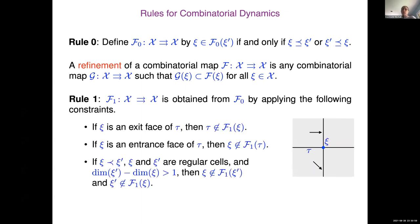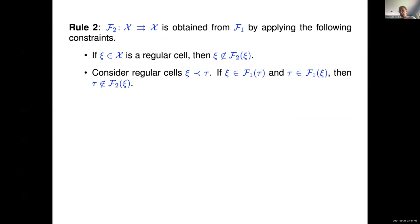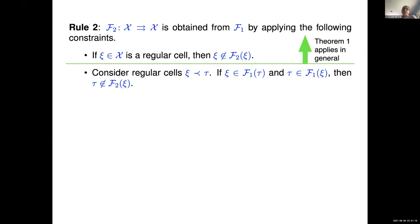I've thrown a lot of information very rapidly. What I do want to point out is that we've used the Rook field to provide local labelings of cells, and from these local labelings I build a combinatorial dynamics. The simplest is: if I'm at a cell, I have the opportunity to go to myself and to any cell that I'm a face of, or any cell which is a face of me. The way I get useful information is by performing refinements. We have a series of rules that go through, look at exit faces, and take away different edges. If I stop at a certain restriction, then Theorem 1 applies in general. It's the additional rules that give rise to proofs about the ODE that we're still working on.